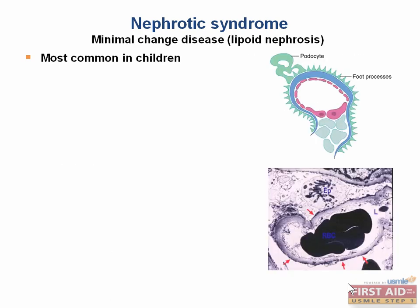Now that we've talked about the most common cause of nephrotic syndrome in adults, let's talk about minimal change disease, which is the most common cause of nephrotic syndrome in kids. You won't see anything abnormal on light microscopy, and that's why it's called minimal change disease.